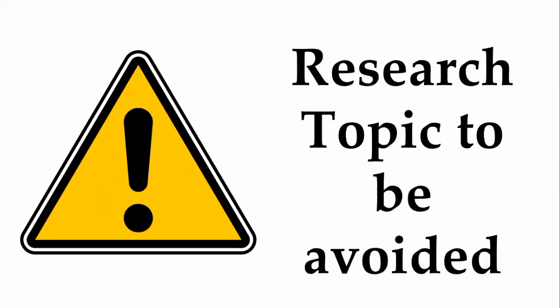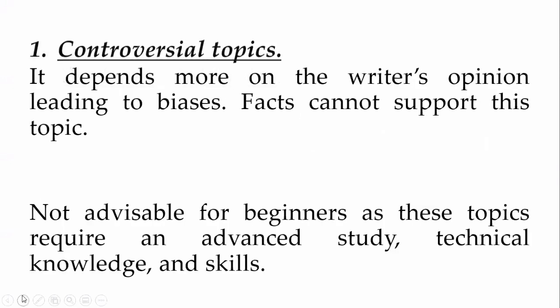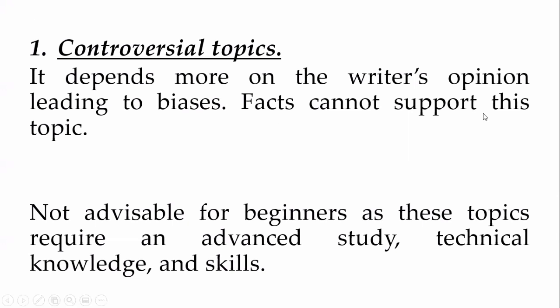Now we are down to research topics to be avoided. Just as there are rules in choosing a research topic, there are also topics you should avoid. Number one: avoid controversial topics — for example, topics that trigger individual biases in the political aspect. These depend more on the writer's opinion, leading to biases in writing your research. If you yourself have a bias or inclination toward a politician or political view, you may inadvertently write in a biased way, and it becomes hard to support your claims with facts.